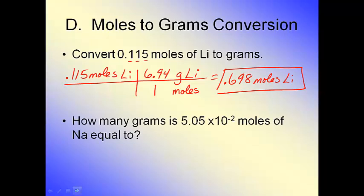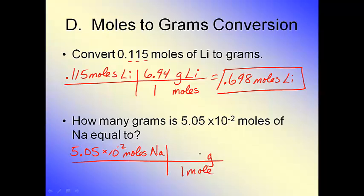Let's not be confused by scientific notation. Scientific notation doesn't change how you do a problem. I'm going to show you in a second how you can put it right into the calculator and have no issues. So it says, how many grams is 5.05 times 10 to the negative 2 moles of sodium equal to? So you start by writing your given. 5.05 times 10 to the negative 2 moles of sodium. 1 mole is going to go on the bottom. The weight of sodium from the periodic table is going to go on the top.